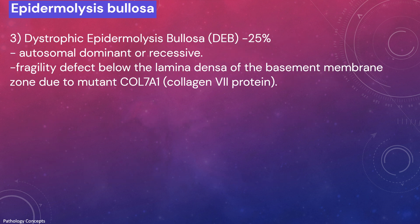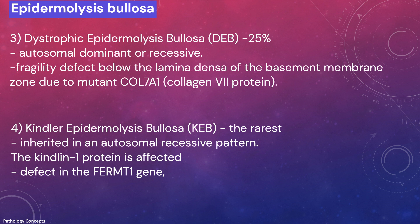Dystrophic epidermolysis bullosa represents around 25% of cases and may have autosomal dominant or recessive pattern. It features a fragility defect below the lamina densa of the basement membrane zone due to mutant collagen 7A1. Kindler epidermolysis bullosa is the rarest of the four major types, inherited in autosomal recessive pattern; the kindlin-1 protein is affected due to a defect in the FERMT1 gene.